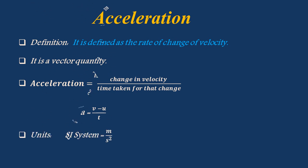In the SI system, acceleration is expressed as meter per second square. Whereas in the CGS system, it is expressed as centimeter per second square.